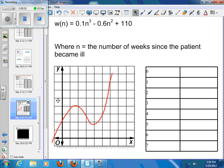But we've got no idea what these numbers are going to be, so we'll just erase that and start plugging in numbers. Since we're talking about number of weeks, it would make no sense to go negative, so we'll just start at zero, which is at the time the person became ill.